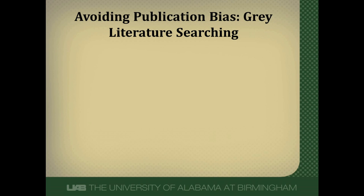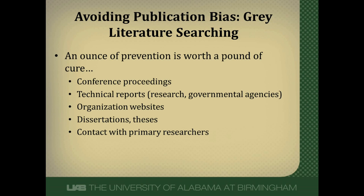The best thing, instead of trying to deal with publication bias, is actually to avoid it altogether. You want the authors of a systematic review to look very broad and wide for every study possible. Specifically, you want them to search what's called the gray literature — things that tend not to be formally published — such as conference proceedings, technical reports, websites, and so on, doing a very broad search to try to find everything possible.